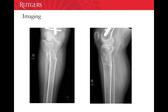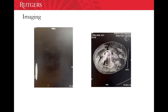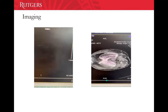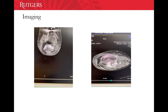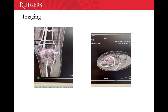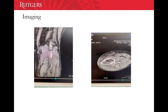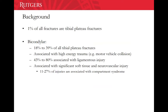Imaging: AP and lateral radiographs of the tibia and fibula show a lateral split at the lateral condyle of the tibia, a medial condyle split, and importantly, a dissociation between the metaphysis and diaphysis of the tibia. CT on axial view shows a severe comminution of the tibial plateau with lateral and medial splits and involvement of the posterior aspect of the tibia.